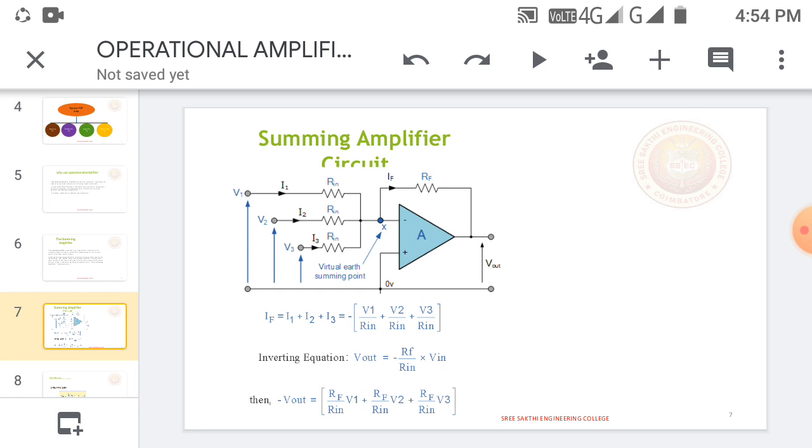We give the inputs V1, V2, and V3, and they are amplified. We get the output at Vout. For example, the current through the feedback resistor, IF, is the combination of I1 plus I2 plus I3.